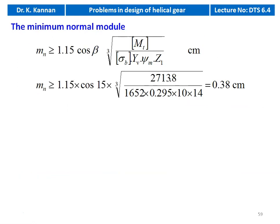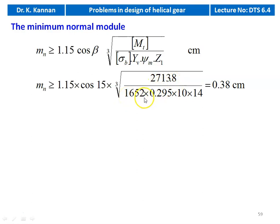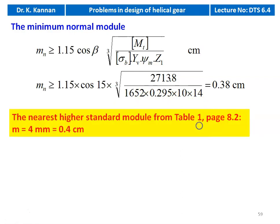We calculate the minimum normal module: M_n ≥ 1.15 × cos(beta) × ∛[MT(design) / (sigma_b × YV × psi_m × Z1)]. Substituting: M_n ≥ 1.15 × cos(15°) × ∛[2713.8 / (1652 × 0.295 × 10 × 14)] = 0.38 cm. We take the nearest higher standard module from table 1, page 8.2: M_n = 4 mm or 0.4 cm.